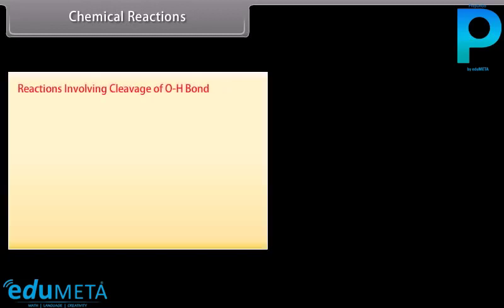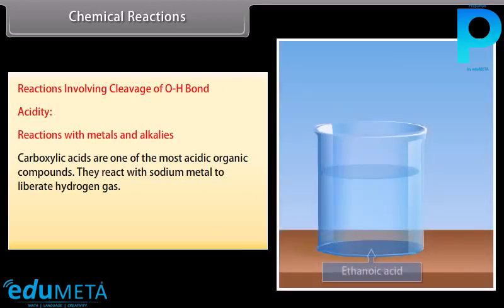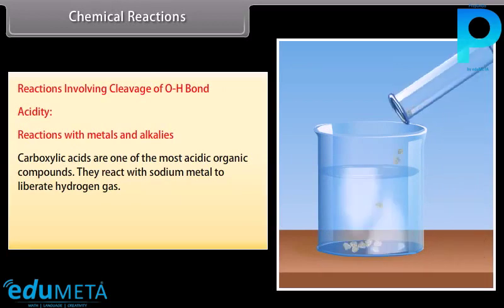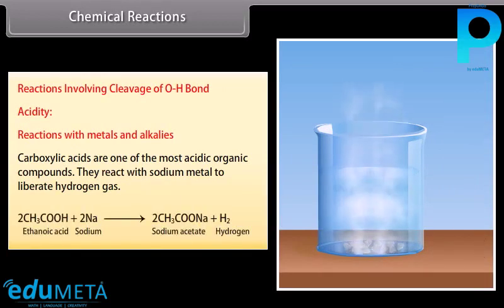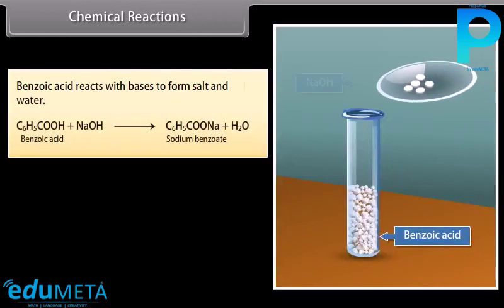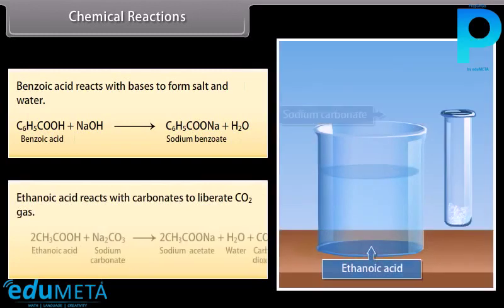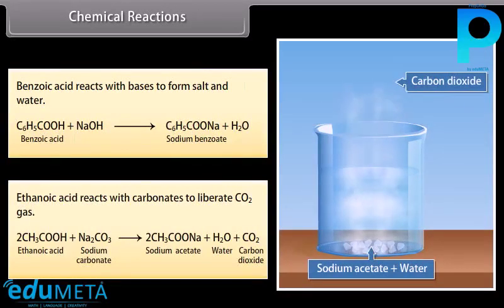Chemical reactions. Reactions involving cleavage of O-H bond. Acidity — reactions with metals and alkalies: carboxylic acids are among the most acidic organic compounds. They react with sodium metal to liberate hydrogen gas. Sodium metal reacts with ethanoic acid to give sodium acetate and liberates hydrogen gas. Benzoic acid reacts with bases to form salt and water. Ethanoic acid reacts with carbonates to liberate carbon dioxide gas.